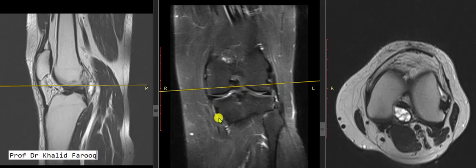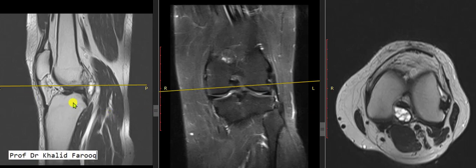Bismillah ar-Rahman ar-Raheem. Assalamu alaikum wa rahmatullah. Here we have an MRI of the knee of a 26-year-old male patient who presented with an old history of knee injury. This is a sagittal T2-weighted sequence, this one is a coronal T2-weighted fat suppression sequence, and here we have an axial T2-weighted sequence.